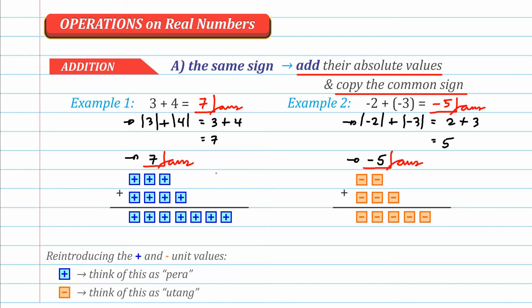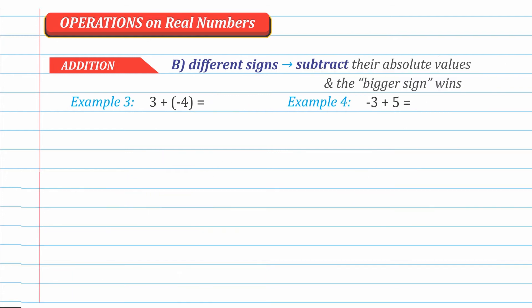Now let's discuss Case B: adding integers with different signs. When addends have the same sign, you add their absolute values. But when they have different signs, you subtract their absolute values. It's still a two-step process — the second step is equally important: the bigger sign wins. Let me explain that in the next example.